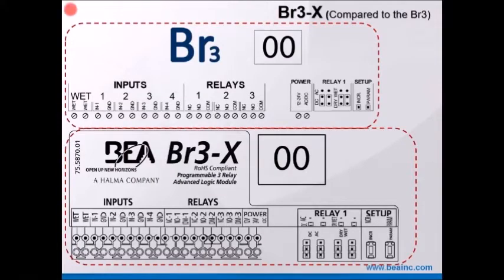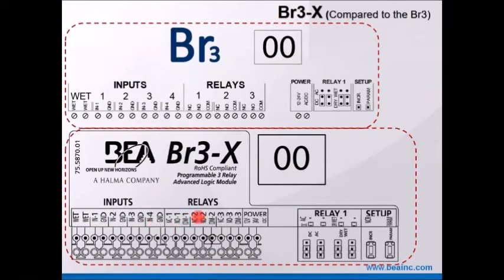Here's a comparison of the BR3X compared to the BR3. Essentially identical — we have a wet input and four dry inputs, same with the BR3X: a wet input and then inputs 1, 2, 3, and 4. Three relay outputs R1, R2, R3, same as the BR3.